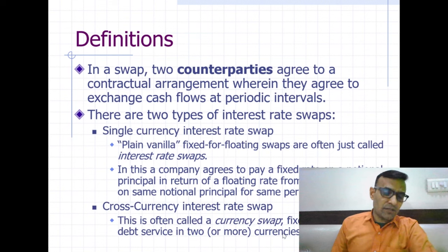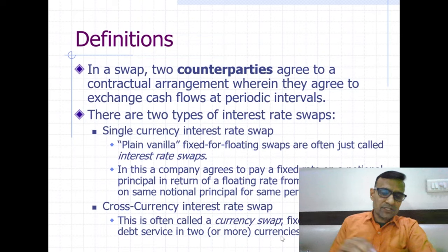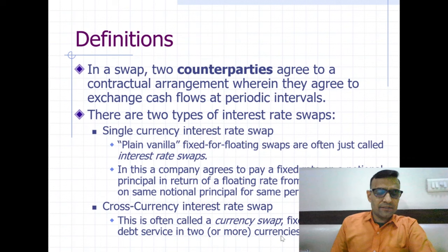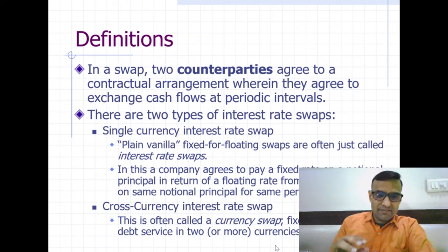Another type is the cross-currency interest rate swap, also known as a currency swap, which can be fixed-for-fixed, floating-for-floating, or fixed-for-floating. In a currency swap contract, you can convert a liability in one currency into another currency liability, or a one-currency investment into another currency investment. We will see this with examples. The topic is relatively new, so just wait — we will discuss it at length.